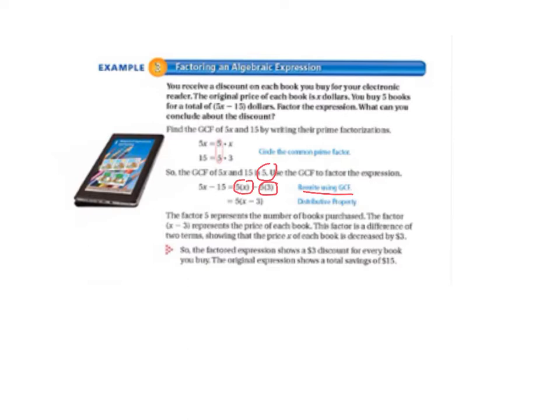And then we put this x on the inside and this 3 on the inside. And we keep their subtraction sign, and we put that on the inside. So, it becomes 5 times x minus 3. Use the distributive property.